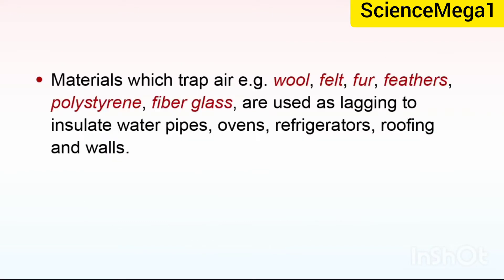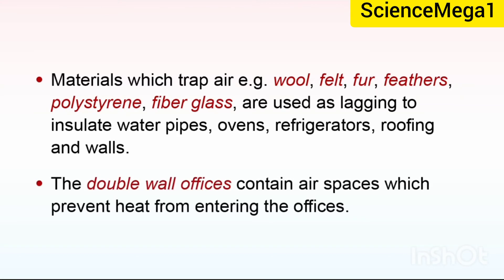Materials which trap air, example, wood, felt, fur, feathers, polystyrene, fiberglass are used as lagging to insulate water pipes, ovens, refrigerators, roofing and walls. The double wood wall of offices contain air spaces which prevent heat from entering the offices.